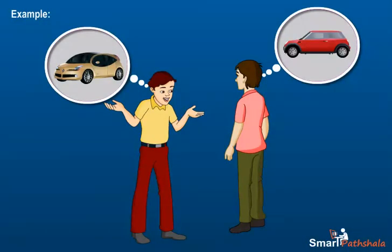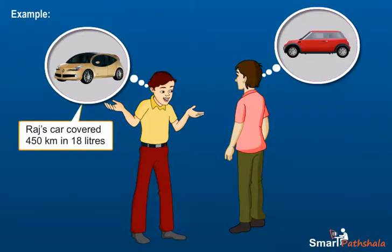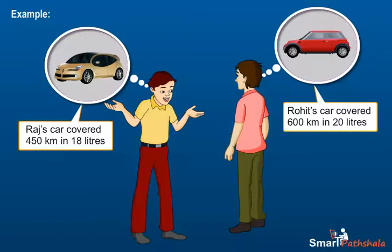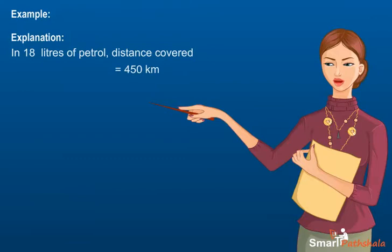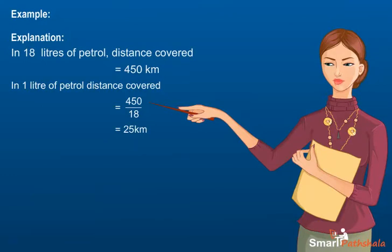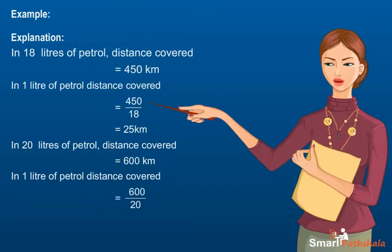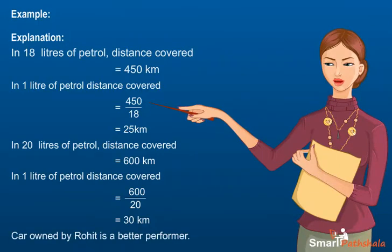Example. Raj and Rohit bought a car each. Raj's car covered 450 km in 18 litres of petrol, while Rohit's car covered 600 km in 20 litres of petrol. Which car has better performance? To find the better performer, we find the distance covered by the car in one litre. Raj's car covers 450 divided by 18 km per litre, which is equal to 25 km. Rohit's car covers 600 divided by 20 km per litre, which is equal to 30 km. So we can see that the car owned by Rohit is a better performer.